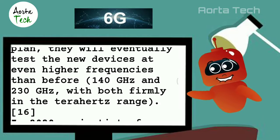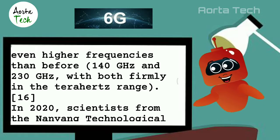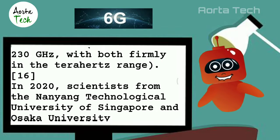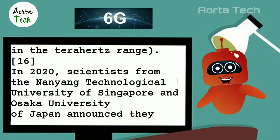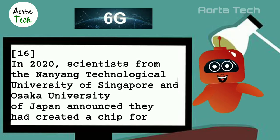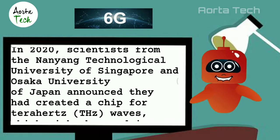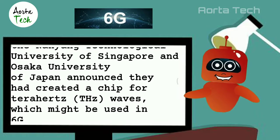In 2020, scientists from Nanyang Technological University of Singapore and Osaka University of Japan announced they had created a chip for terahertz (THz) waves, which might be used in 6G.